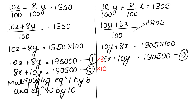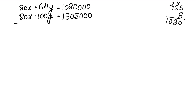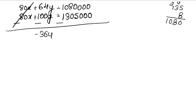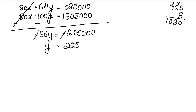Subtracting equation 1 (multiplied) from equation 2 (multiplied): 80x + 100y minus 80x + 64y. The 80x terms cancel (minus minus cancel). This gives 36y = 225,000.